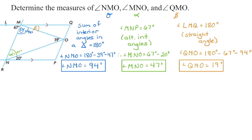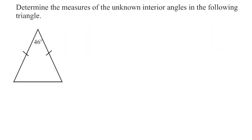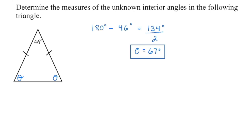If you can't easily identify angle relationships, try rotating your paper — sometimes turning it upside down or sideways helps you see things differently. When you think you've got the measures, check them multiple ways using the angle relationships you know. In our final example, we have an isosceles triangle — the tick marks indicate two equal side lengths, which means the two base angles are equal. Starting with 180 degrees and removing the known angle of 46 degrees, we have 134 degrees split evenly between the two base angles. Dividing by two, each base angle equals 67 degrees.